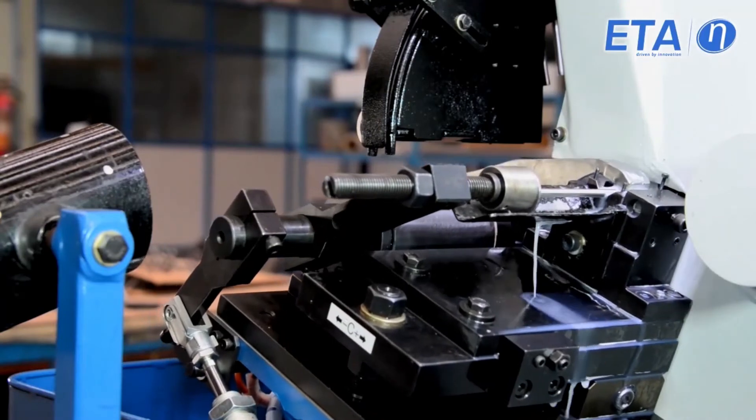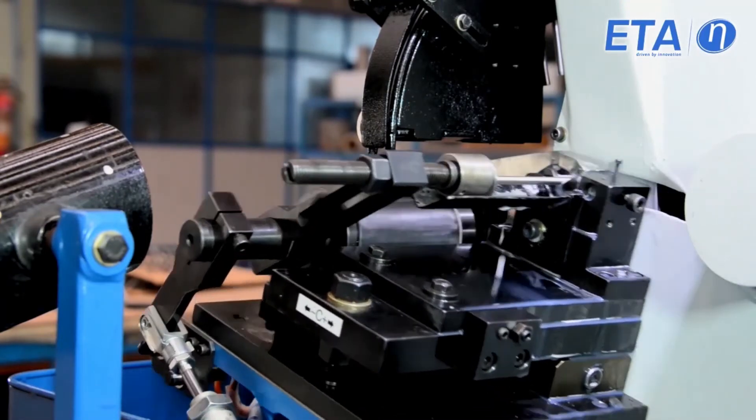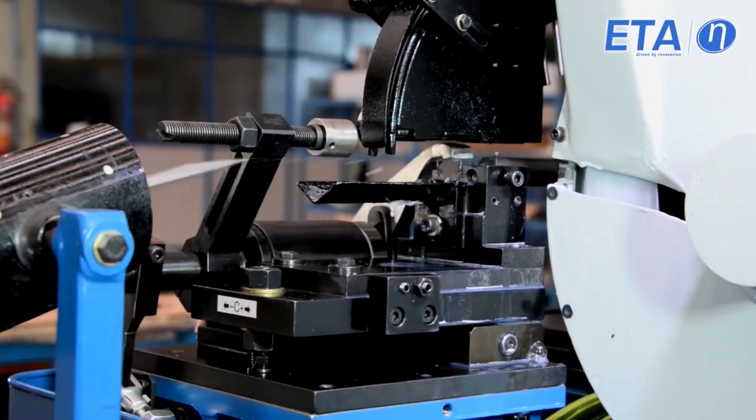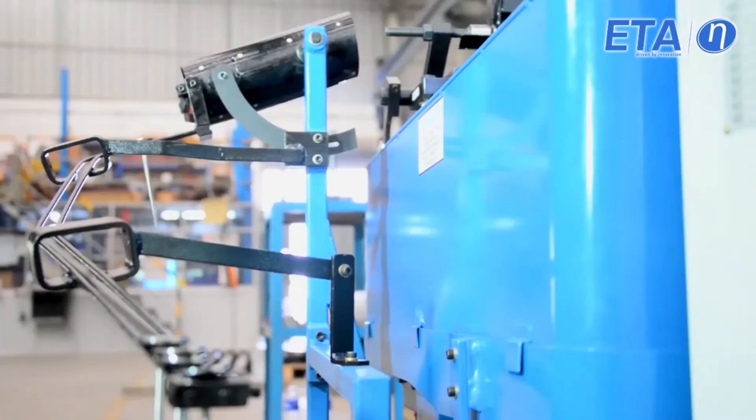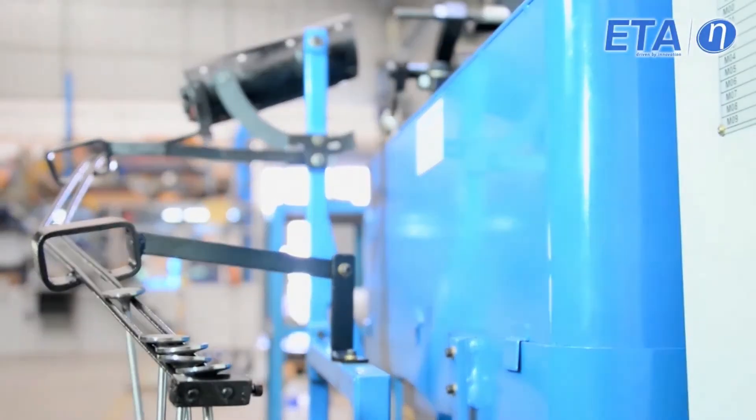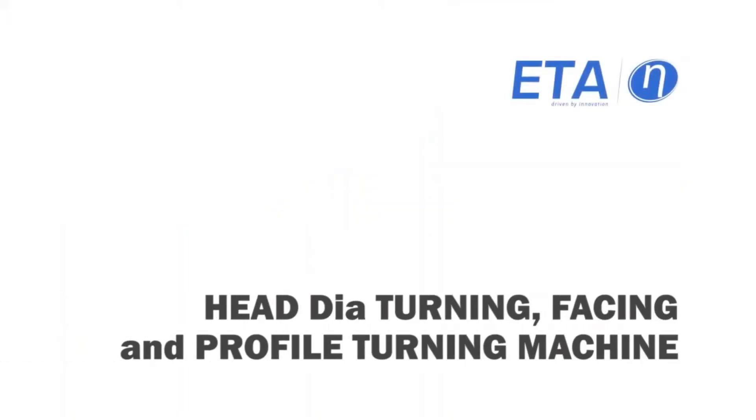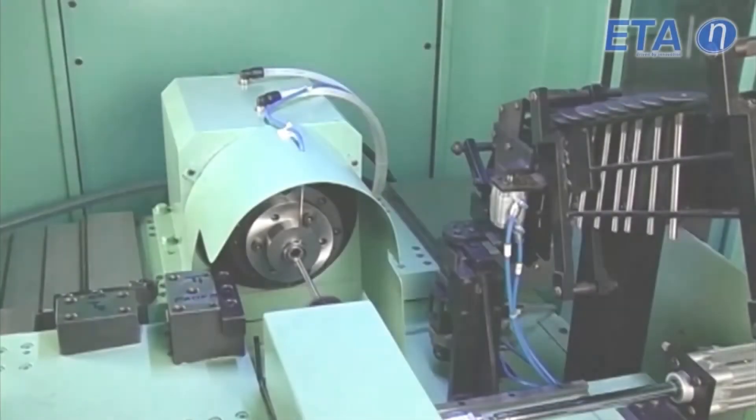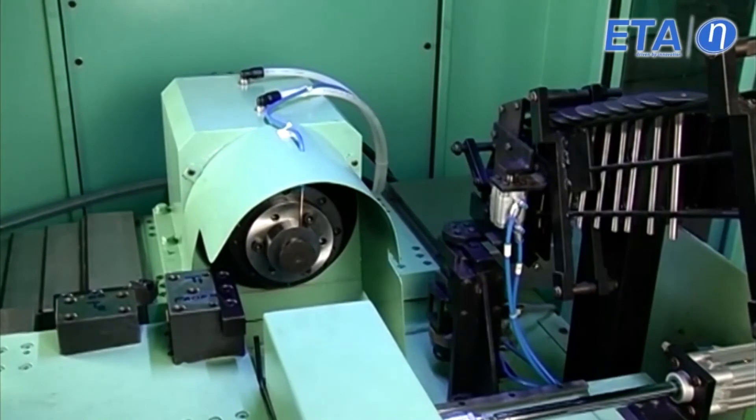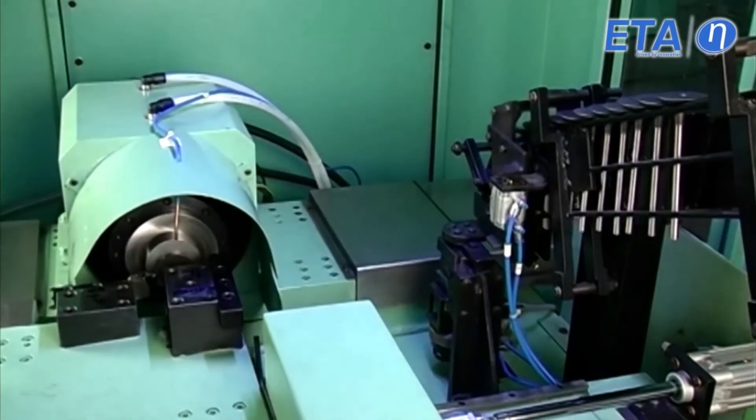The component is ejected out and guided through a shoot to the bin. Head dyer turning, facing, and profile turning machine. ETA supplies machines for turning and facing engine valves.